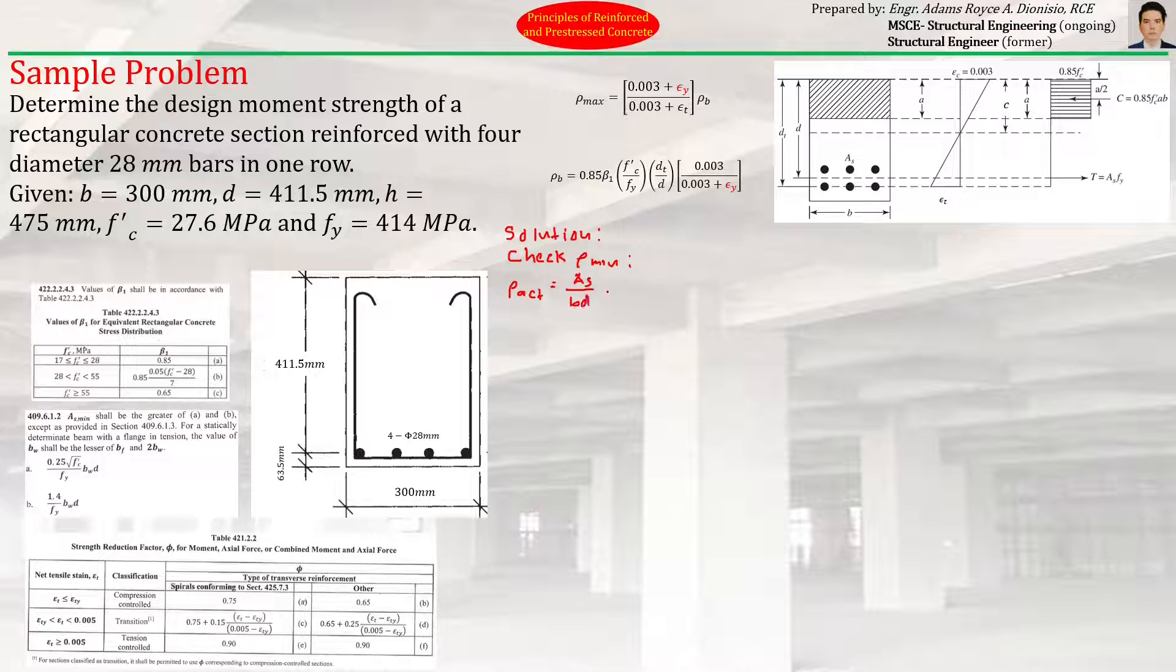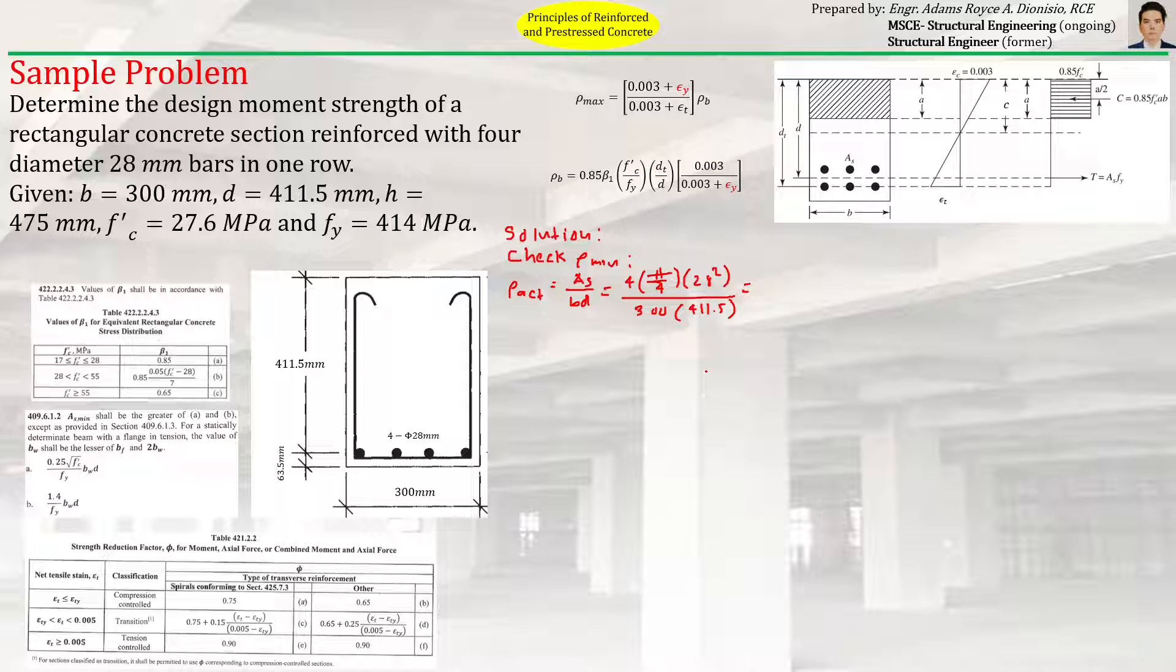is equal to As over bd, which equals 4 times π/4 times diameter squared divided by b times d = 411.5. So that will be 4 times π/4 times 28 squared divided by 300 times 411.5. ρ equals 0.01995.